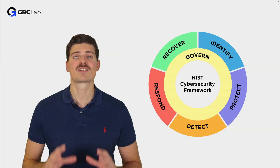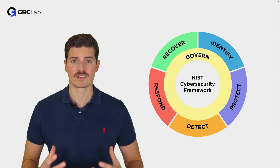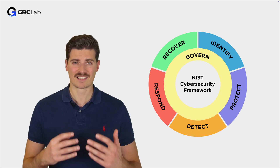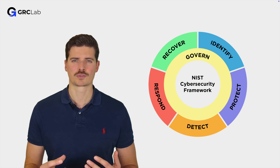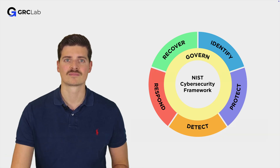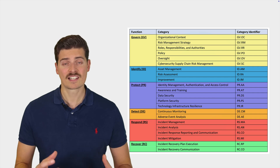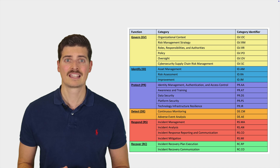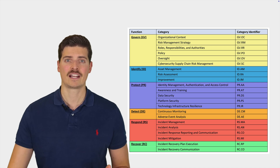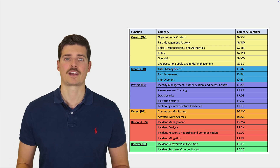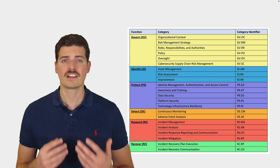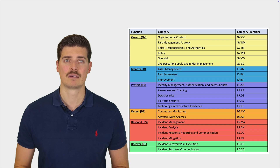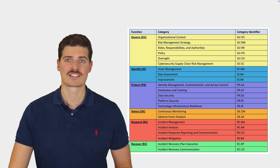The core is often symbolized as a wheel because all of its functions relate to each other. The Govern function is usually placed right in the center as it directs and controls all other functions at the same time. The six functions are supported by 22 categories, as shown in this table. Categories have a unique identifier that contains the ID of their respective function. For example, the very first category of the Govern function has the identifier GV.OC, with GV being the ID of the Governance function.